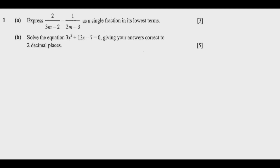So let me look at question 1a. Express x plus 2 over 3m minus 2, minus 1 over 2m minus 3, as a single fraction in its lowest terms. This is a question that always comes up. It's a matter of understanding the tricks. As I answer this question I'm going to give you the tricks you need to pay attention to. Once you master that, this question becomes a giveaway question.